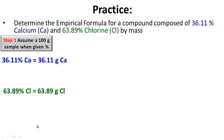Practice: determine the empirical formula for a compound composed of 36.11% calcium and 63.89% chlorine by mass. Pause while you work on this problem; when you're ready to check your work, hit play. Step one: assume a 100-gram sample. 36.11% becomes 36.11 grams of calcium, and 63.89% becomes 63.89 grams of chlorine.